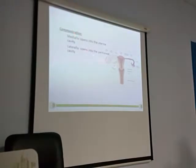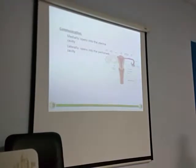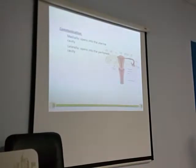Even the fallopian tubes — laterally it opens into the peritoneal cavity, because it is an open cavity in the case of the female. Because the ovary is inside the cavity, this fallopian tube has to open into the cavity, and from there it will try to catch the ovum.